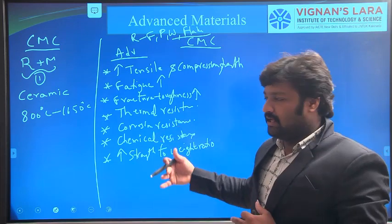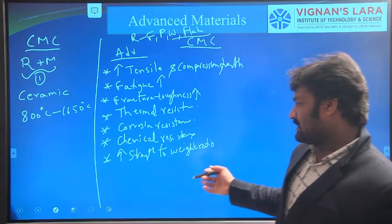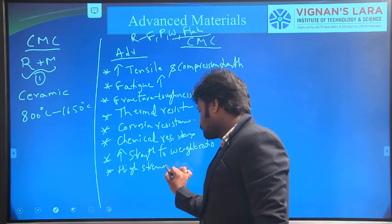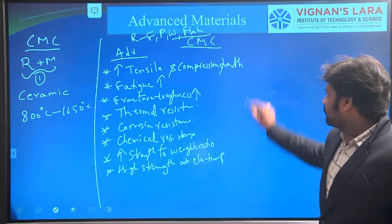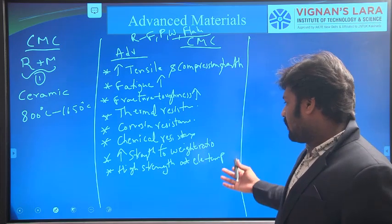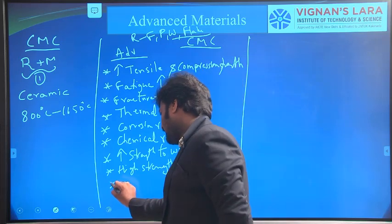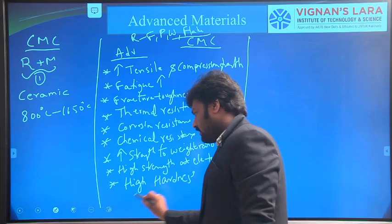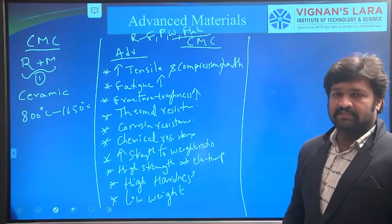With respect to its weight, the strength of Ceramic Matrix Composites is high. These materials also have high strength at elevated temperatures. They have high hardness, and the main advantage is low weight. These are the various advantages of Ceramic Matrix Composites.